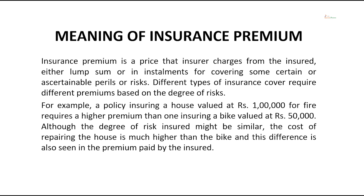Let us make it more clear with an example. A policy ensuring a house valued at rupees 1 lakh for fire requires a higher premium than one ensuring a bike valued at rupees 50,000. Although the degree of risk might be similar — that is the accident — the cost of repairing the house is much higher than the bike, and this difference is also seen in the premium paid.